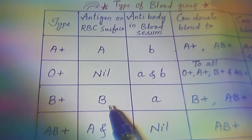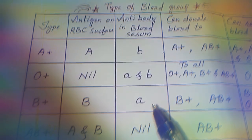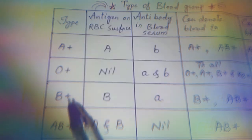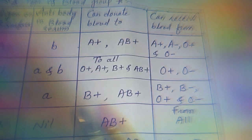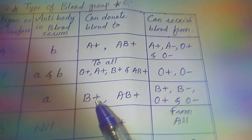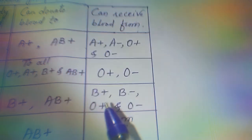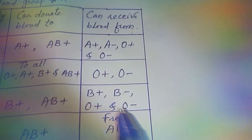For B positive blood group, there is antigen B on the surface of the RBC and antibody A in the blood serum. The positive sign shows the presence of the Rh factor. A B positive person can donate blood to B positive and AB positive persons, and can receive blood from B positive, B negative, O positive, and O negative persons.